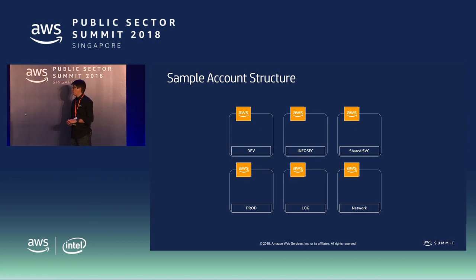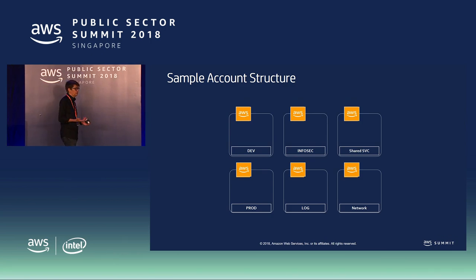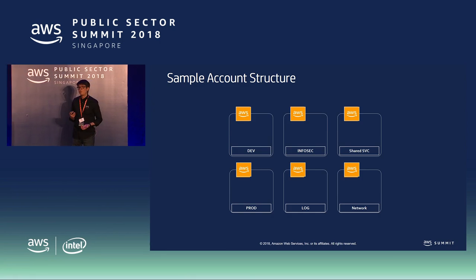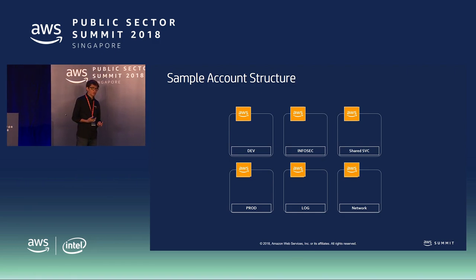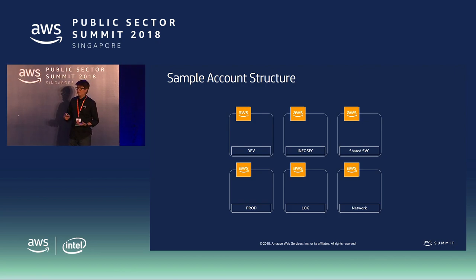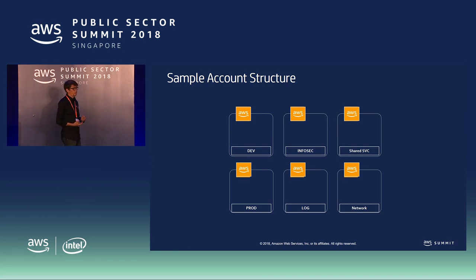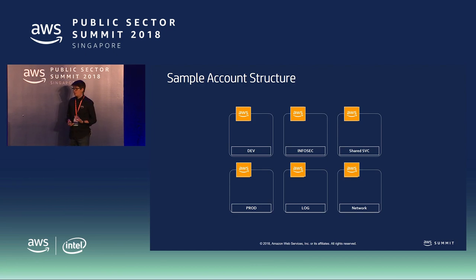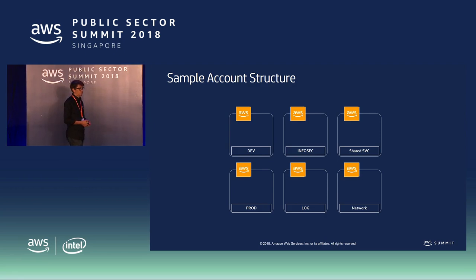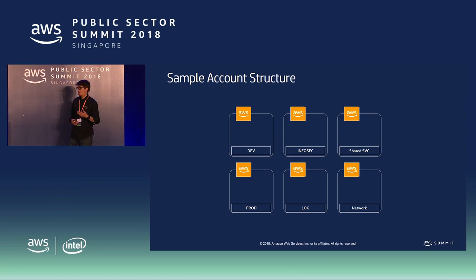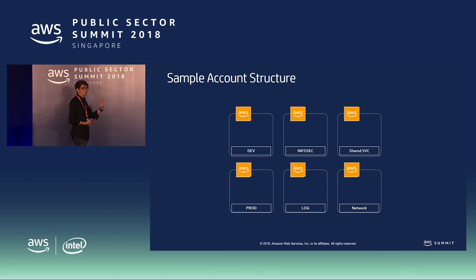Here is a sample account structure. Typically you have a dev environment and a prod environment. Within a traditional IT setup, you also have certain shared or common services. At the same time, you want a central logging account to collect all logs from all different accounts centrally, so you're able to identify and remediate any events. There's typically also an infosec account — this is where you provision users for cross-account access, so instead of managing identities in every single account, users log in centrally and do cross-account access to those different accounts.